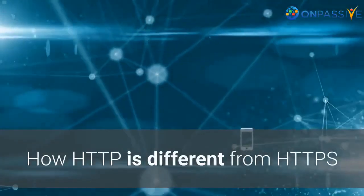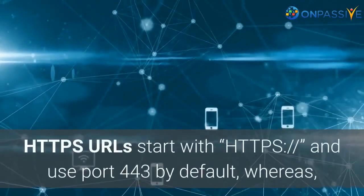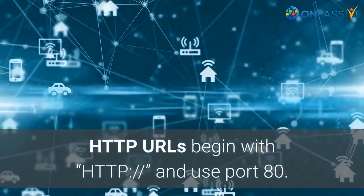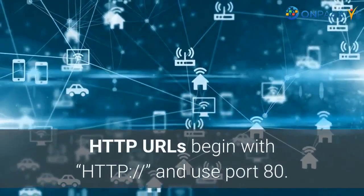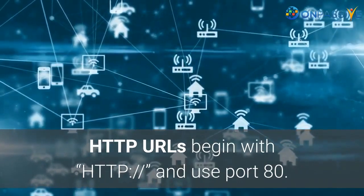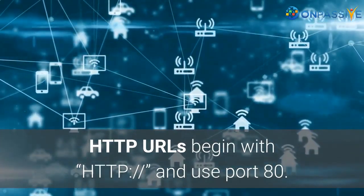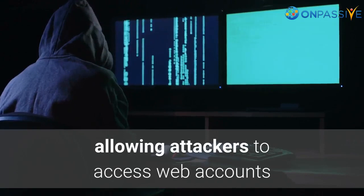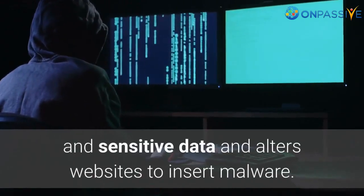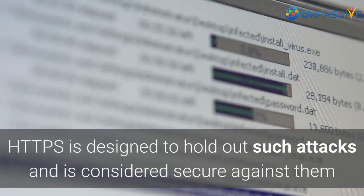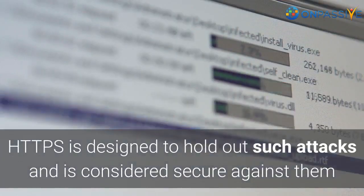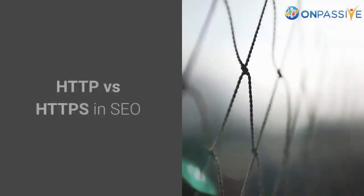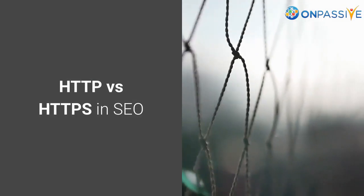How HTTP is different from HTTPS: HTTPS URLs start with and use port 443 by default, whereas HTTP URLs begin with and use port 80. HTTP is not encoded and thus is defenseless to man-in-the-middle attacks, allowing attackers to access web accounts and sensitive data and alter websites to insert malware. HTTPS is designed to withstand such attacks and is considered secure since it is encrypted with Transport Layer Security.